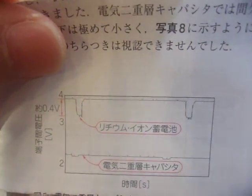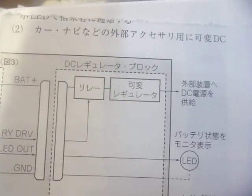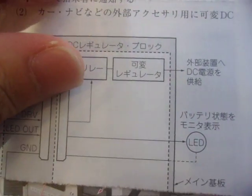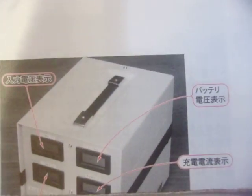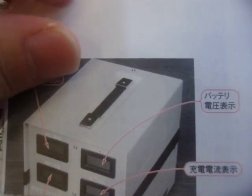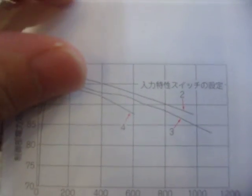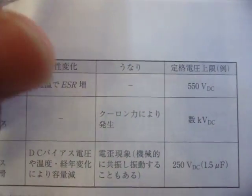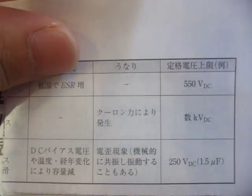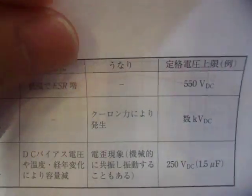So the combined contribution from all graphs at genus h is like j to the power of 4h divided by n to the power of 2h, or g_2 to the power of 2h, where g_2 is j squared over n. So the correct genus-counting parameter for this theory is not 1 over n squared, but j to the 4th over n squared.